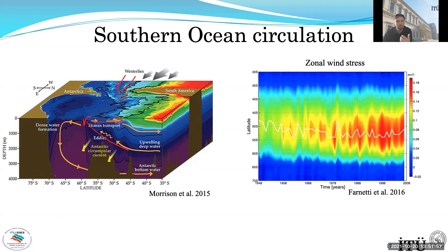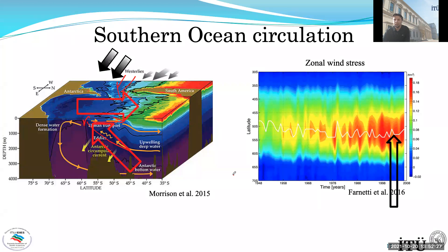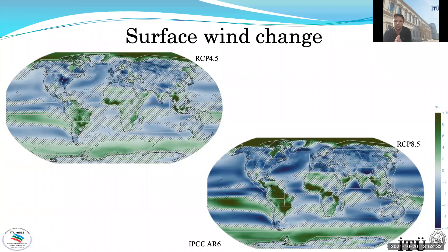A paper by Farnett et al. shows reanalysis data of the zonal wind stress over the Southern Ocean over the last 50 years, and something peculiar is visible: the wind is increasing and shifting southward — one of the effects of global warming. Looking at the new AR6 RCP scenarios showing wind change between different scenarios, you can see that in the Southern Ocean, in both low- and high-emission scenarios, winds are increasing. This is an expected result coming from the IPCC models.